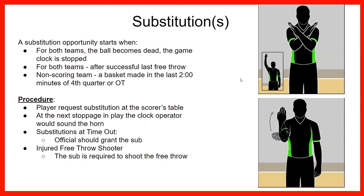Substitutions: there's no limit to them. We just need to ensure they are reporting to the table. Both teams can sub after the successful last free throw. The non-scoring team can also sub when a basket is scored — for example, if your team got scored on with 1:56 left in the fourth quarter, the sub can come in because it's a dead ball, but the scoring team would not get a substitution there. Substitutions can occur before and after a timeout; they should be requested at the scorers table and the official grants that.